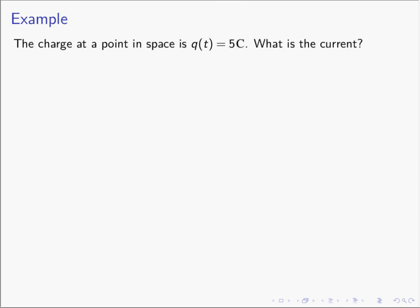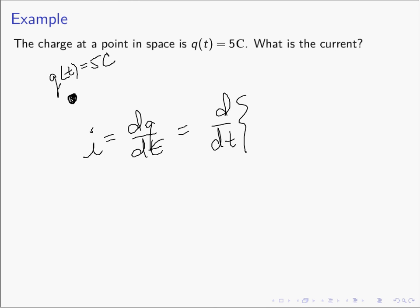Let's do some examples. If a particular point in space has a charge function Q(t) = 5 coulombs, what is the current? We know I = dq/dt, so we take the time derivative of our charge function. The time derivative of a constant 5 coulombs is 0, so the current is 0 amperes. If the charge is not changing, there are no charges coming or going, so the current must be 0.